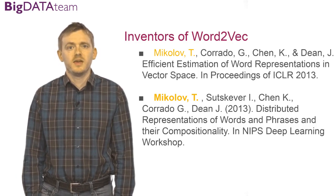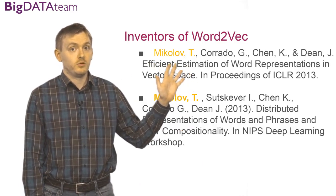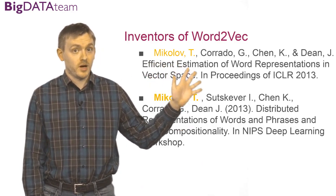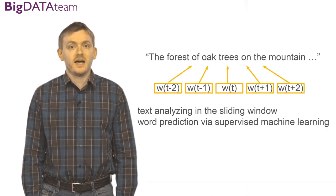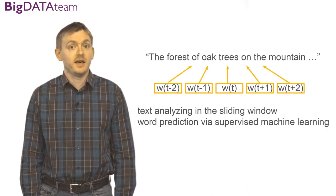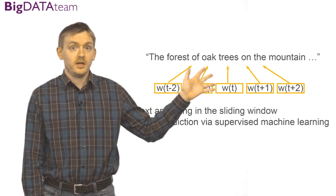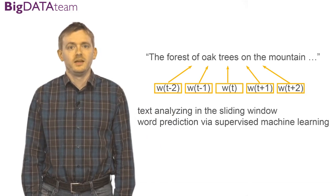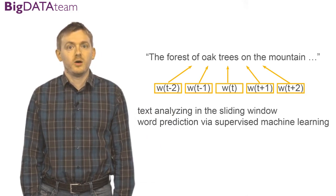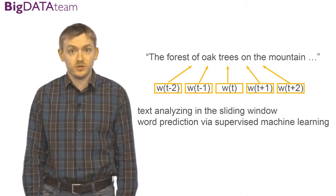Consider the beginning of a sentence: the forest of oak trees on the mountain. The Word2Vec model analyzes text in a sliding window. Here is a sliding window of size 5. In this window there are always 5 consecutive words.